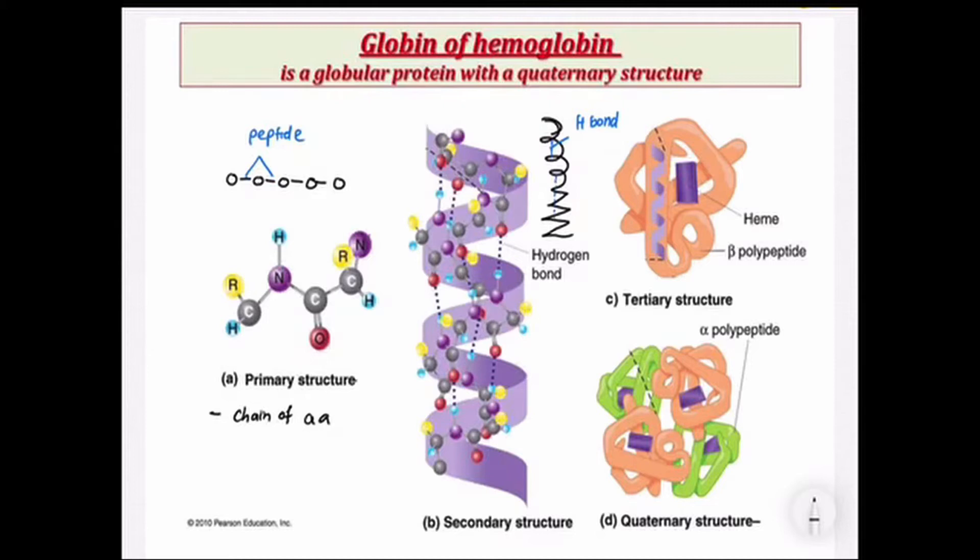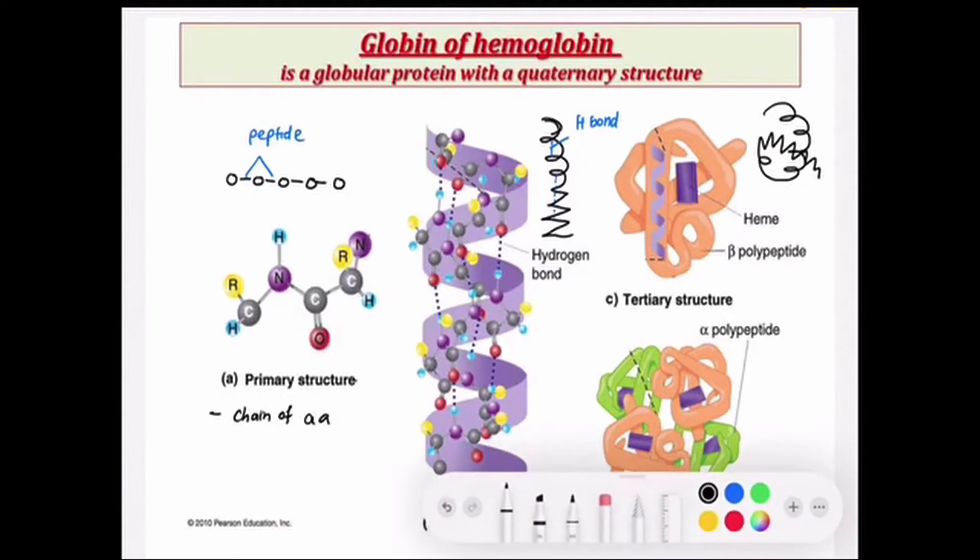As for tertiary structure, the same polypeptide chain will continue to fold onto itself to form a spherical shape. The shape is maintained by four types of bonds, which includes hydrogen bonds.